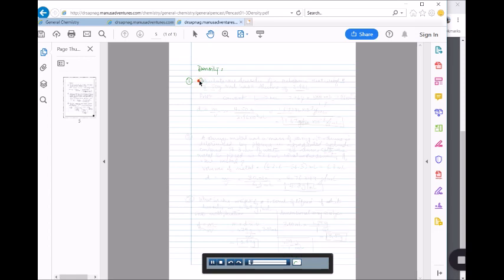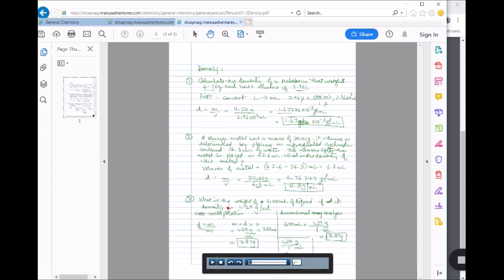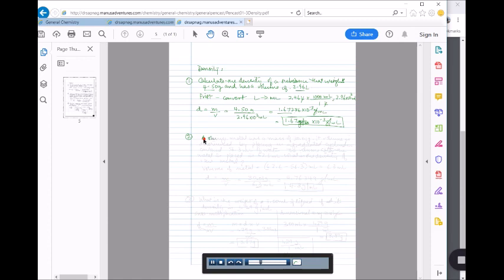So then you're like, okay I understand this question, I can do this myself, but I really don't understand the second one. So you can actually skip all of the first one and go right to the second. So essentially you can move all over the pencast.